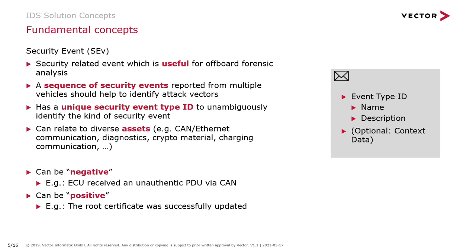A security event can be negative — for example, that an ECU received an unauthenticated PDU via CAN — or it can be positive, such as a root certificate being successfully updated. It should be useful for later analysis of the security state of vehicles. It is defined by at least a security event type, which defines its name and description, and can optionally have context data providing additional information, such as a PDU ID or a certificate number.